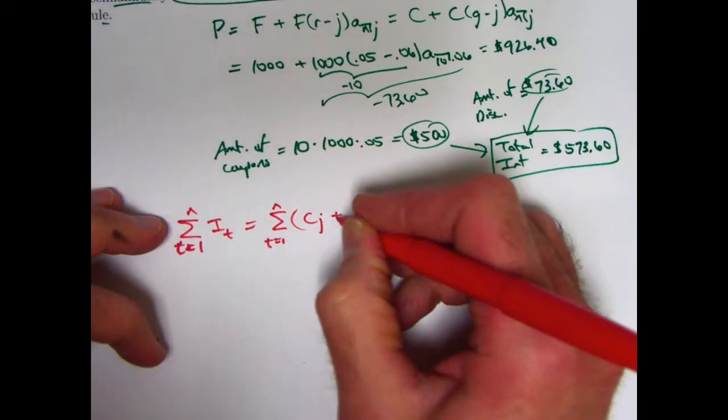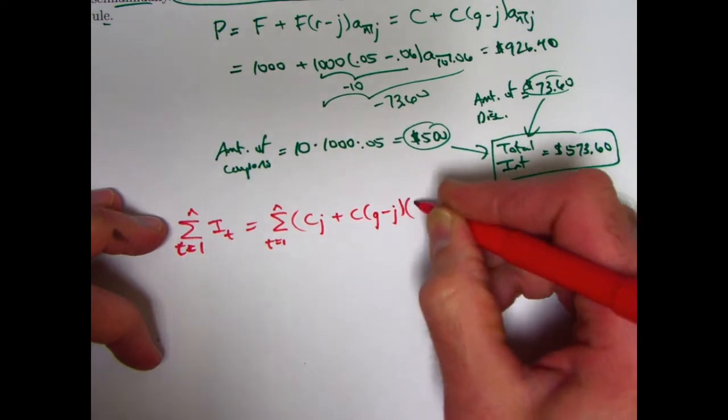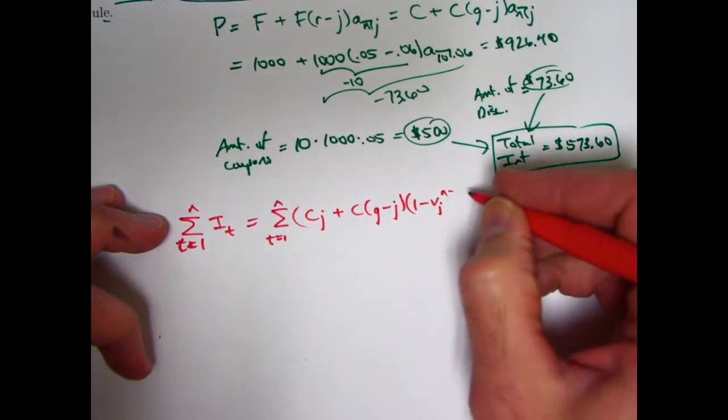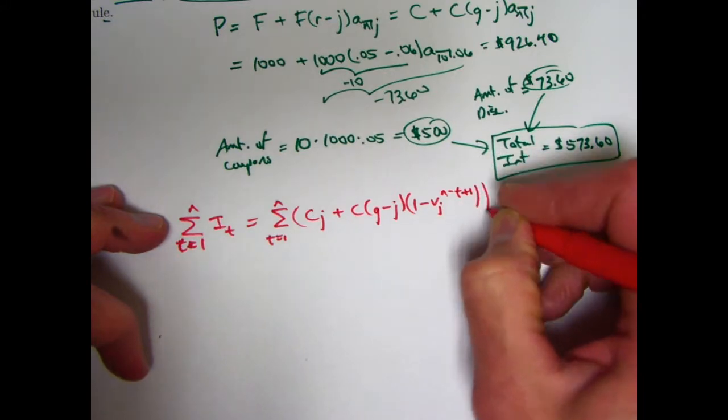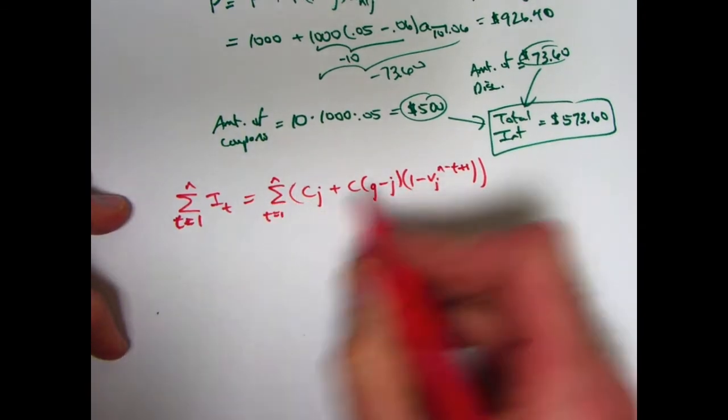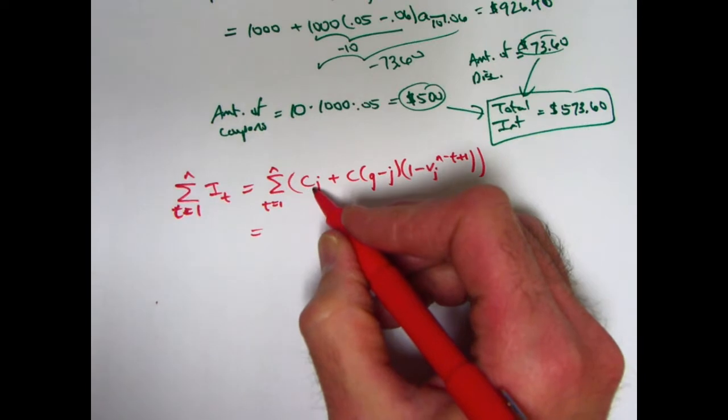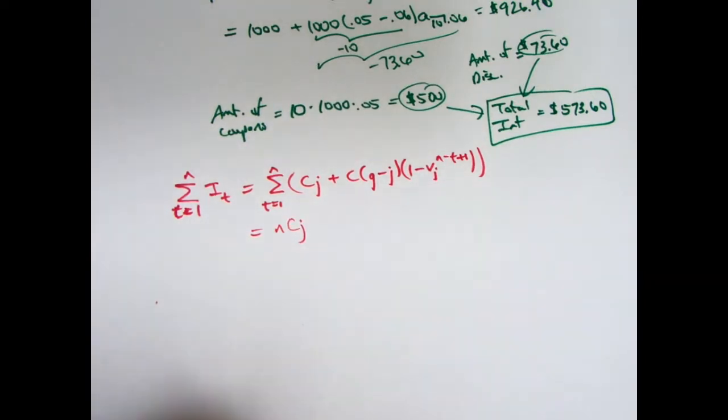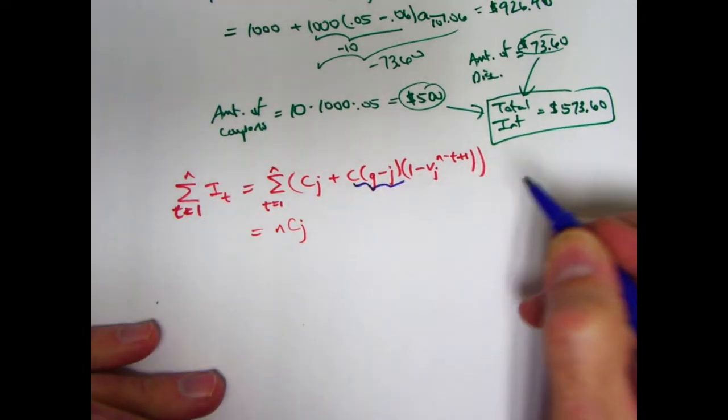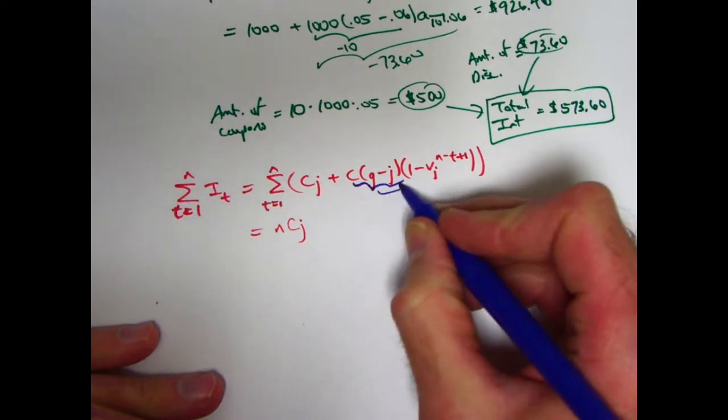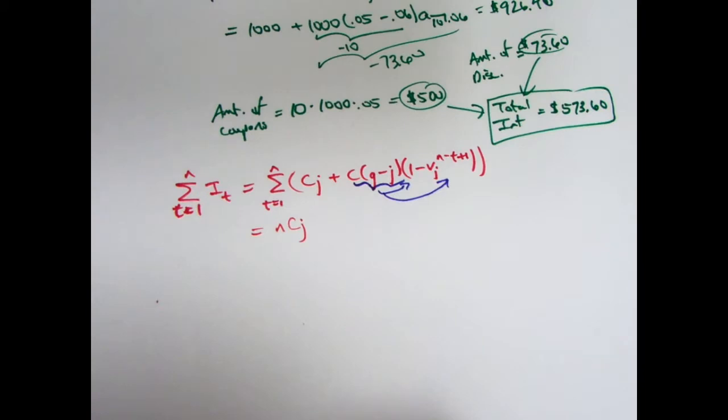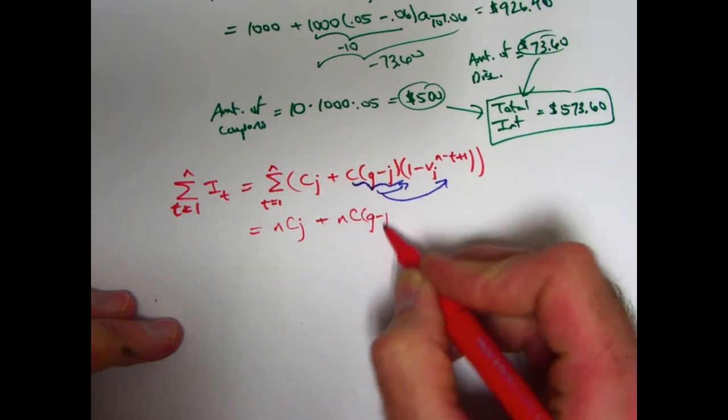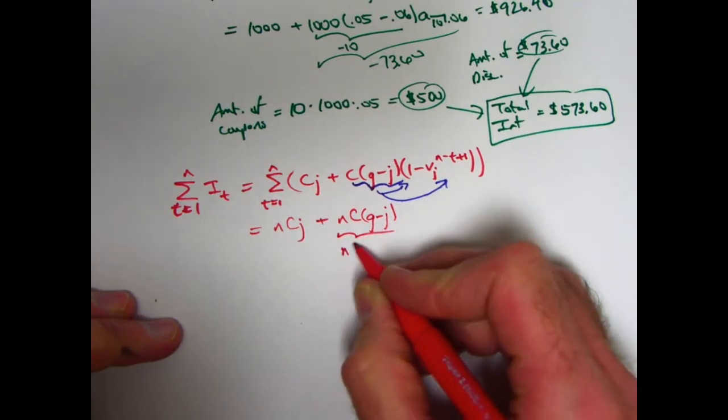It is going to be C times J plus C times in parentheses G minus J times one minus V_J to the N minus in parentheses T minus one power. I can also distribute the minus sign through to get N minus T plus one power here. And you're looking at this kind of thing and maybe feeling pretty good because your algebra skills are good. You should distribute the summation through the parentheses. You look at that and say, there's no T's there. That's constant with respect to T. So adding up N of those gives me N times C times J. You could use foil here, but I could also think of it as multiplying C times in parentheses G minus J times one, and then also separately times negative V_J to that power that you see there. When I multiply it times one, that's another constant with respect to T. So when I add those up, I get N times C times in parentheses G minus J.